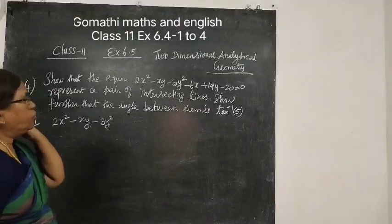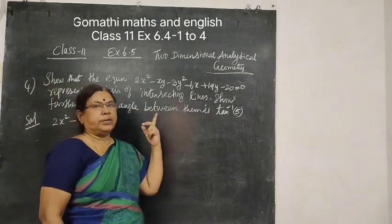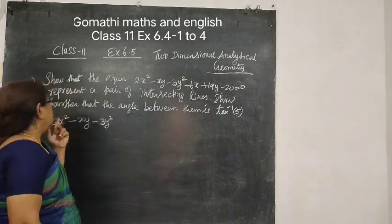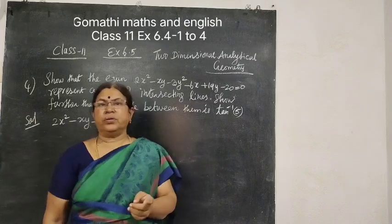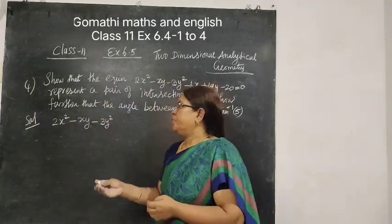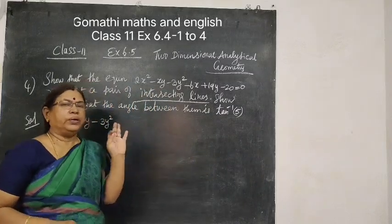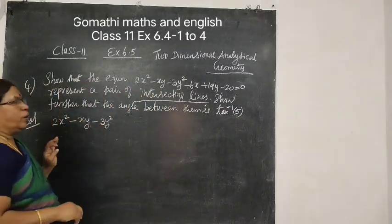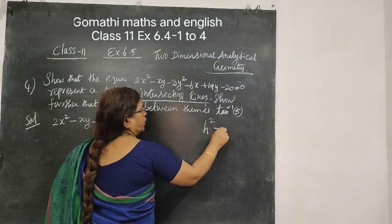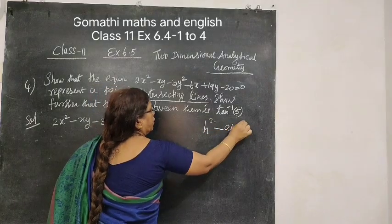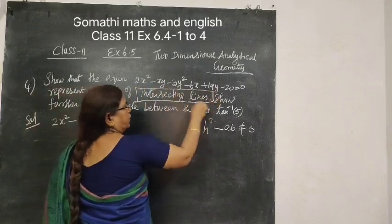Now question number 4. Show that the equation represents a pair of intersecting lines, and further that the angle between them is tan inverse 5. If 2 lines are intersecting, condition is H squared minus AB not equal to 0.